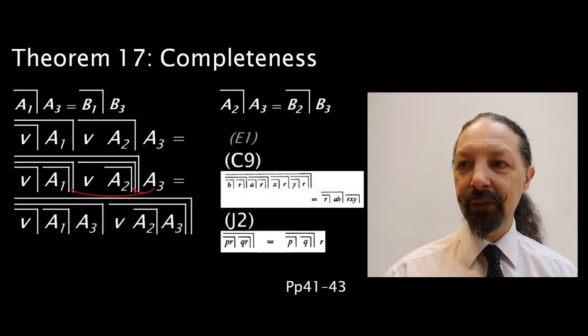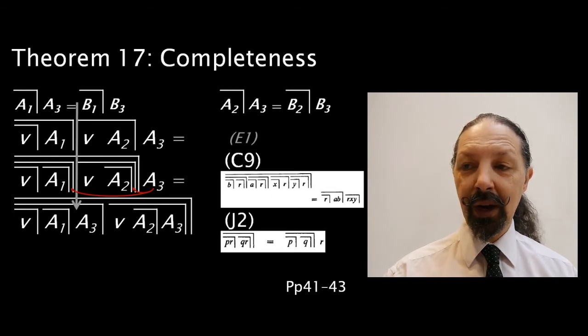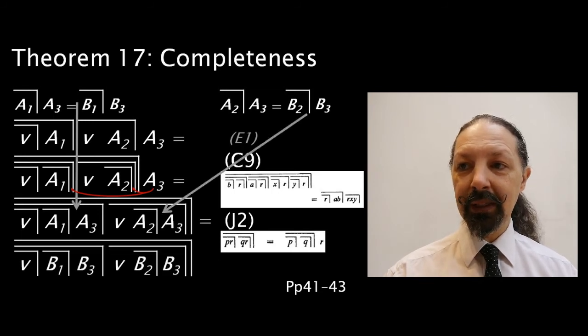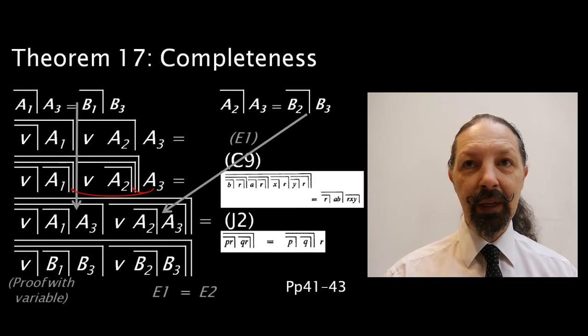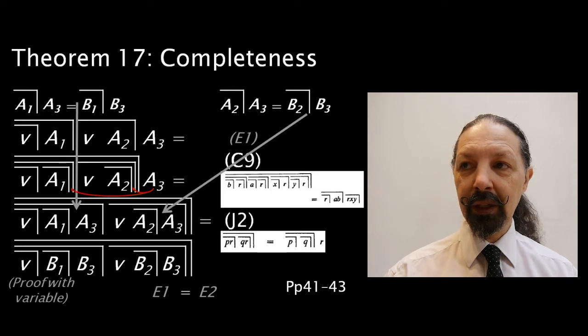We apply J2. And we're going to substitute, because we know that A1 mark A3 is equivalent to B1 mark B3. We do the same for this part. And that is equal to that. So E1 equals E2. And that holds.